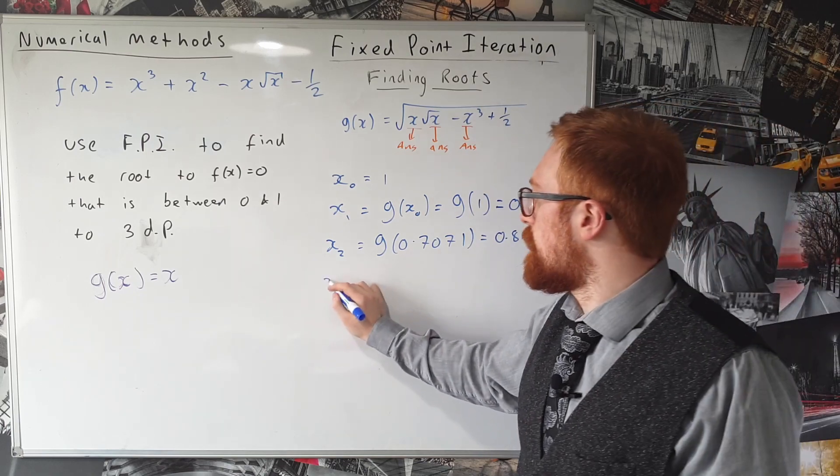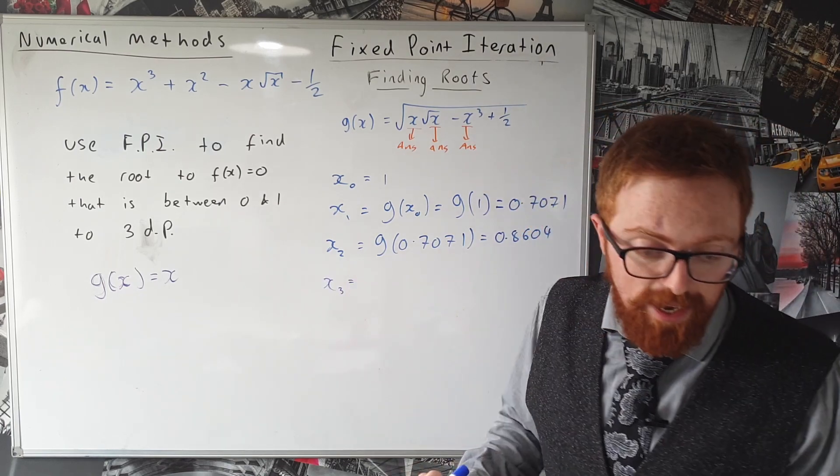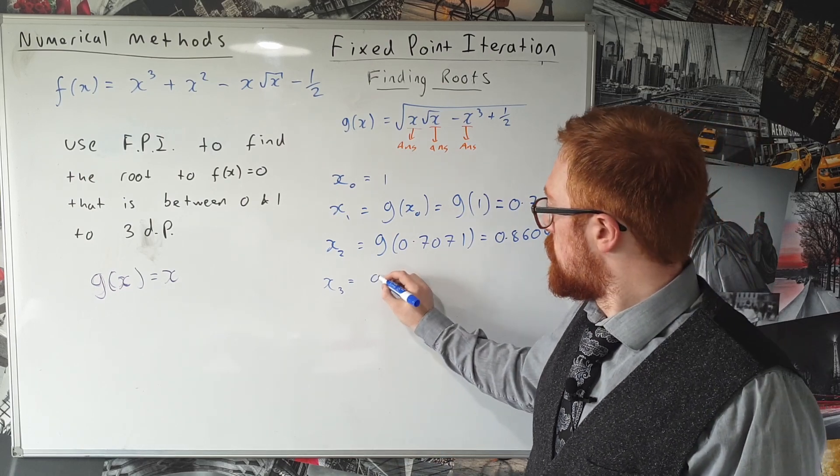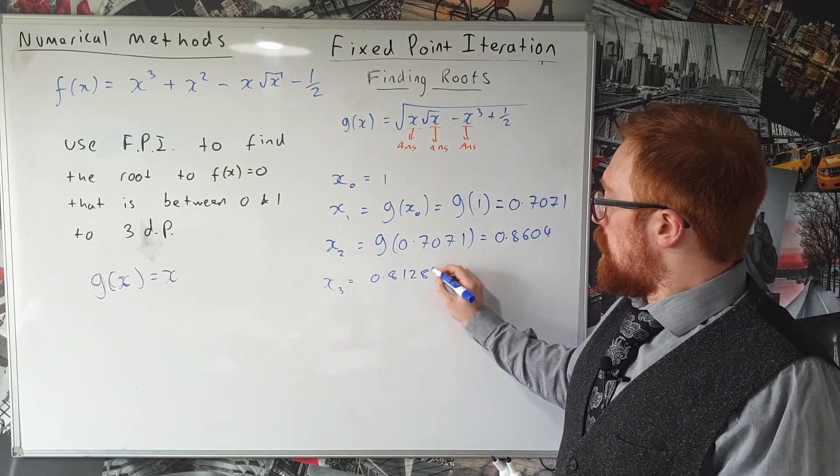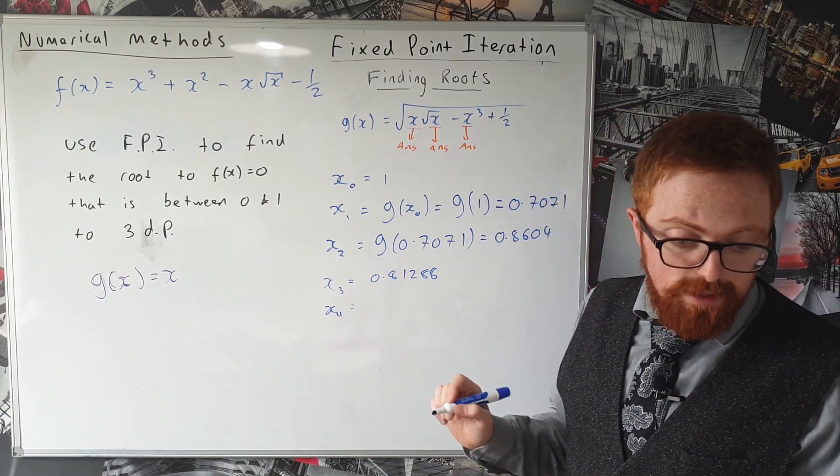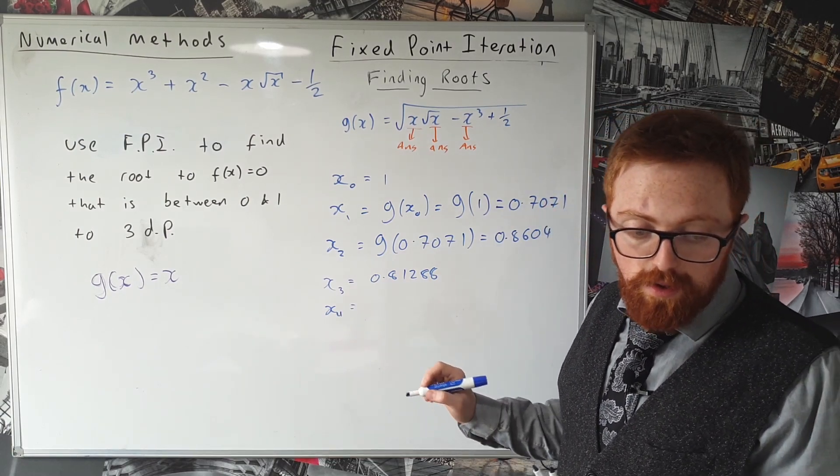OK anyway, so if we carry on this sequence we get x₃ equals 0.81288, x₄ equals 0.83412.